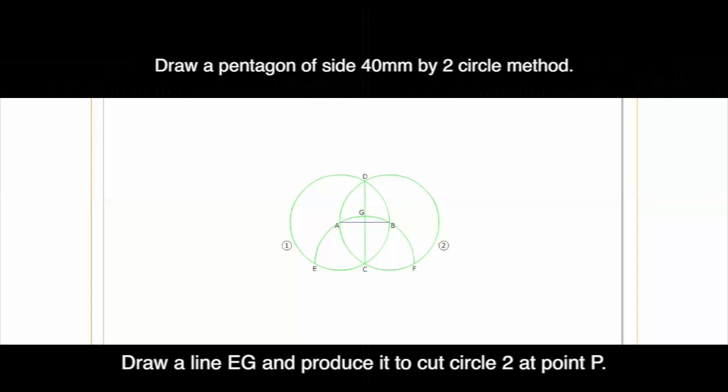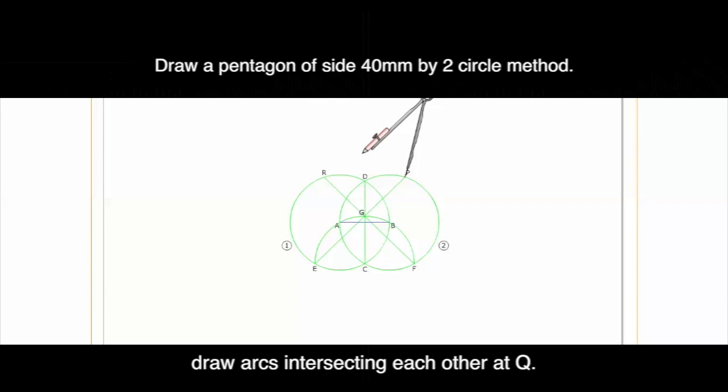Draw a line EG and produce it to cut circle 2 at point P. Draw a line FG and produce it to cut circle 1 at point R. With P and R as center and AB as radius, draw arcs intersecting each other at Q.